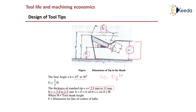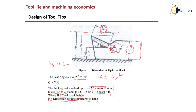The b/c ratio — that is the width to thickness ratio of the insert — is 1.6 to 2.7. The dimension e = g + b·sin(θ) + c·cos(θ), which must be greater than or equal to h, the tool shank height. The dimension f is the distance to the line of centers of the lathe.